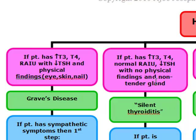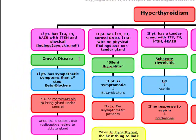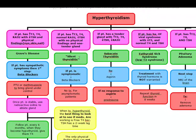The next patient has no physical findings — that's the first thing that distinguishes it from Graves' disease. They have an increased T3 and T4 with a decreased TSH, just like the Graves' patient, but they have a normal radioactive iodine uptake. This patient has silent thyroiditis. For silent thyroiditis, we only treat symptomatic patients, and symptomatic patients are going to get beta blockers. If the patient is asymptomatic, there's no treatment.